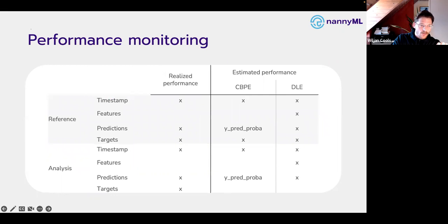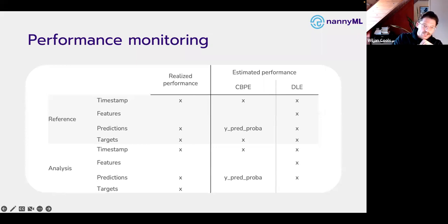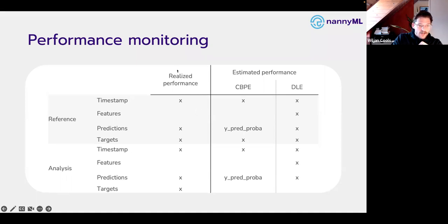Quick recap on performance monitoring and what data is consumed: technically we don't need a timestamp because we can do size-based chunking, but it's always good practice since from a business perspective chunking is mostly time-based. For realized performance, we need predictions and targets for both reference and analysis. For estimated performance, we don't have targets — so we leverage predicted probabilities for classification, and for regression we use model outputs and features from training, test sets, and production.